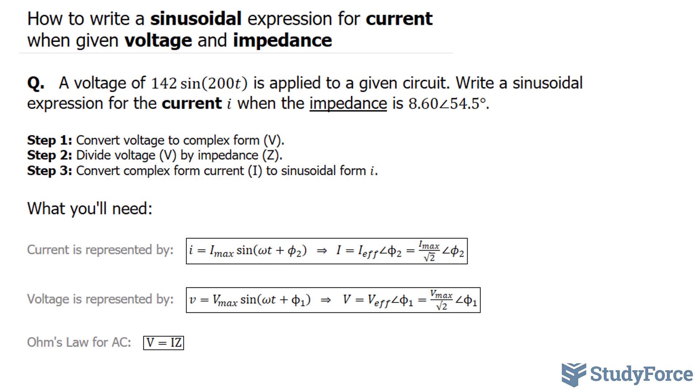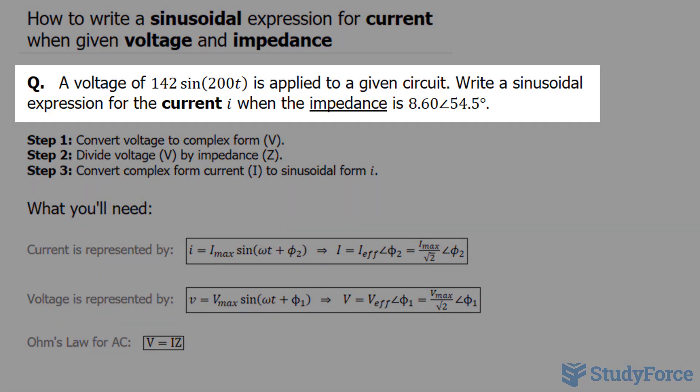In this video, I'll show you how to write a sinusoidal expression for current when given voltage and impedance. The question reads: a voltage of 142 sin(200t) is applied to a given circuit. Write a sinusoidal expression for the current i when the impedance is 8.60 ∠54.5°.